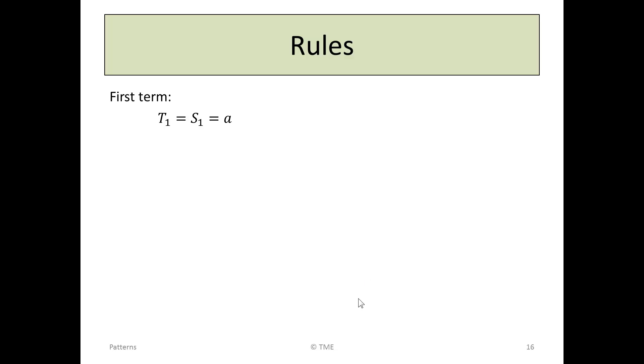There are some rules when we're using these formulae in problems to do with patterns. The first one is that the first term, T1, is also called S1, because it's the sum of the first term. And it's also the letter A. In terms of definitions, the sum of the first term is the first term. The sum of the first two is T1 plus T2. The sum of the first three is T1 plus T2 plus T3. And the sum of the first N is T1 all the way to TN.